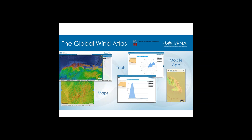The Global Wind Atlas dataset and tools were developed by the Technical University of Denmark. It is a contribution of Denmark, through DTU, to the work of the Clean Energy Ministerial, and materializes achievements of the CEM's Multilateral Solar and Wind Working Group, led by Denmark, Germany, and Spain. According to the IRENA Data Quality Classification, the DTU Global Wind Atlas is recommended for education, policymaking, and analysis of potentials — for identifying opportunity areas and further investigation of renewable energy potentials. This data is not recommended for financial decision-making, but rather to help countries understand where their resources lie and help companies prospect emerging wind markets.